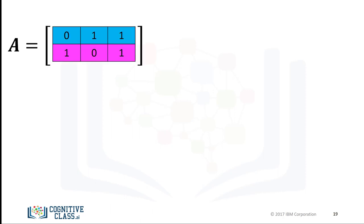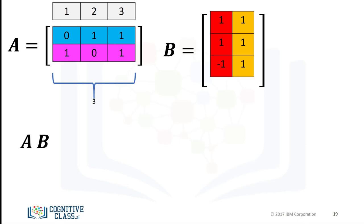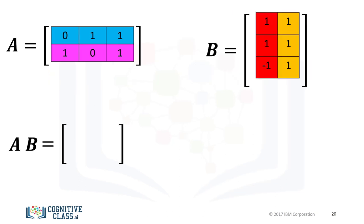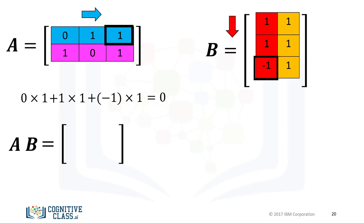We can also perform matrix multiplication with NumPy arrays. Matrix multiplication is a little more complex, but let's provide a basic overview. Consider matrix A, where each row is a different color, and matrix B, where each column is a different color. In linear algebra, before we multiply matrix A by matrix B, we must make sure that the number of columns in matrix A — in this case 3 — is equal to the number of rows in matrix B — in this case 3. To obtain the i-th row and j-th column of the new matrix, we take the dot product of the i-th row of A with the j-th column of B. For the first row and first column, we take the dot product of the first row of A with the first column of B. The result is zero.